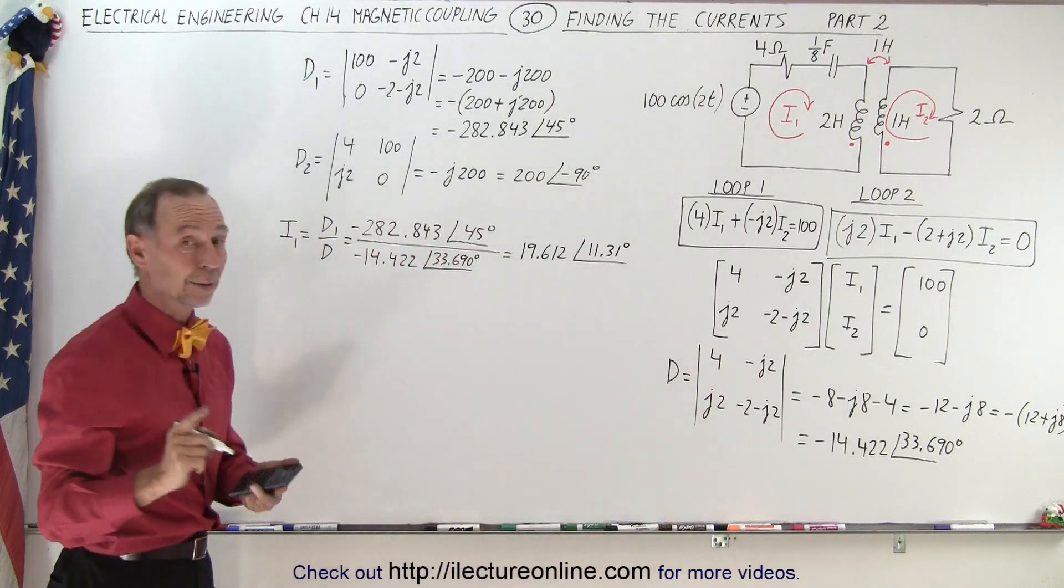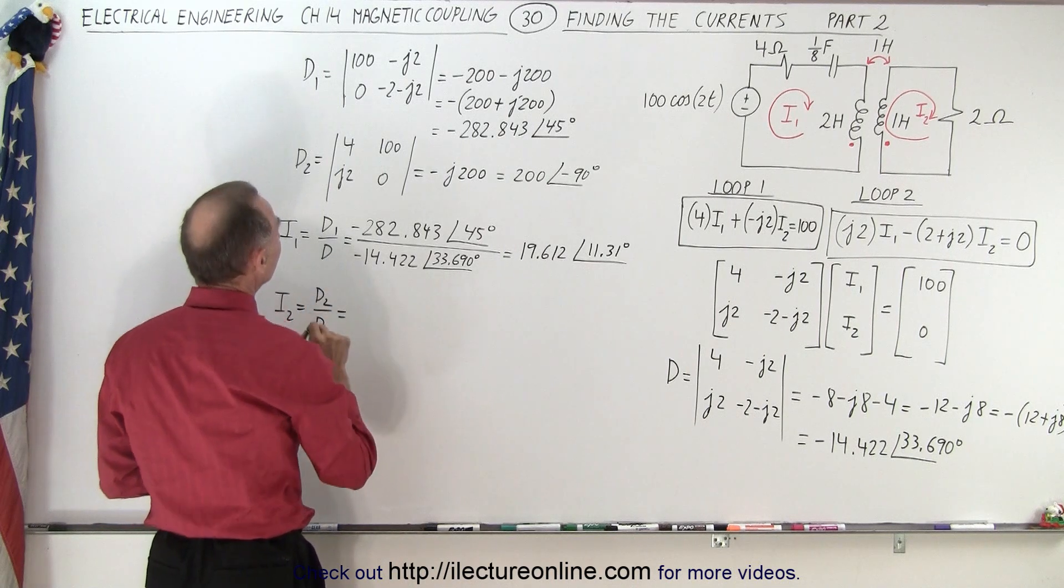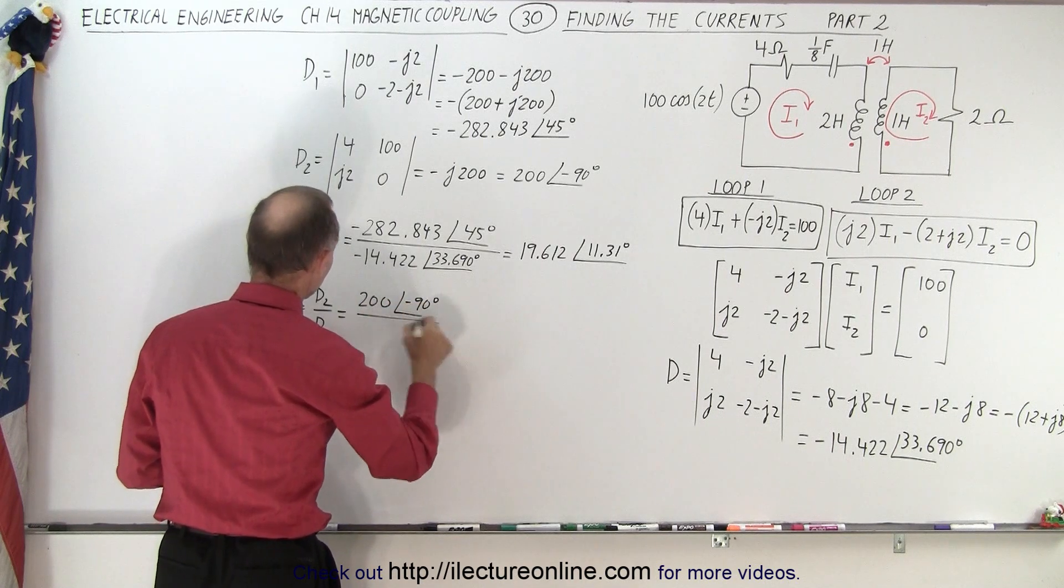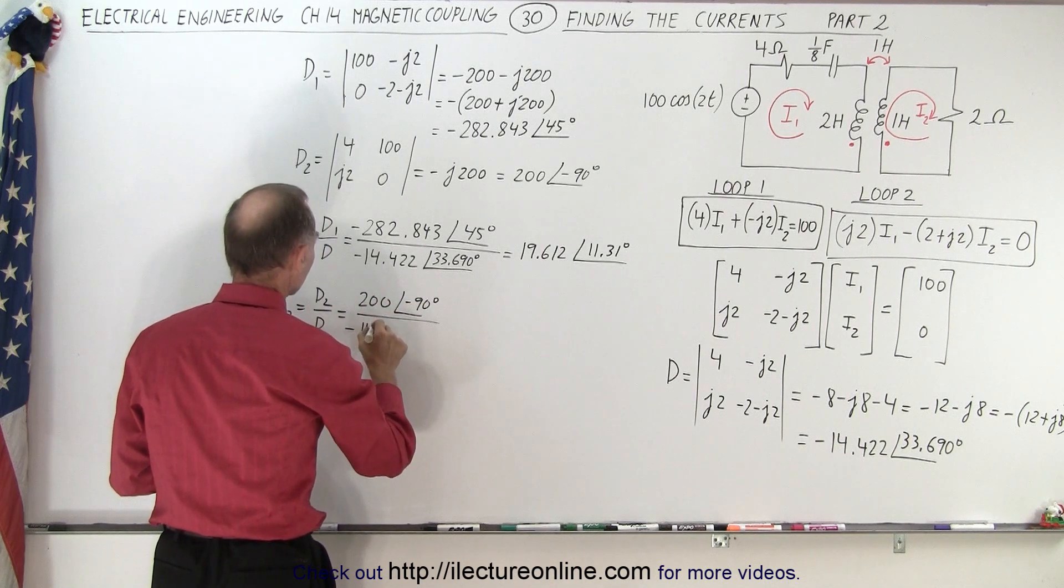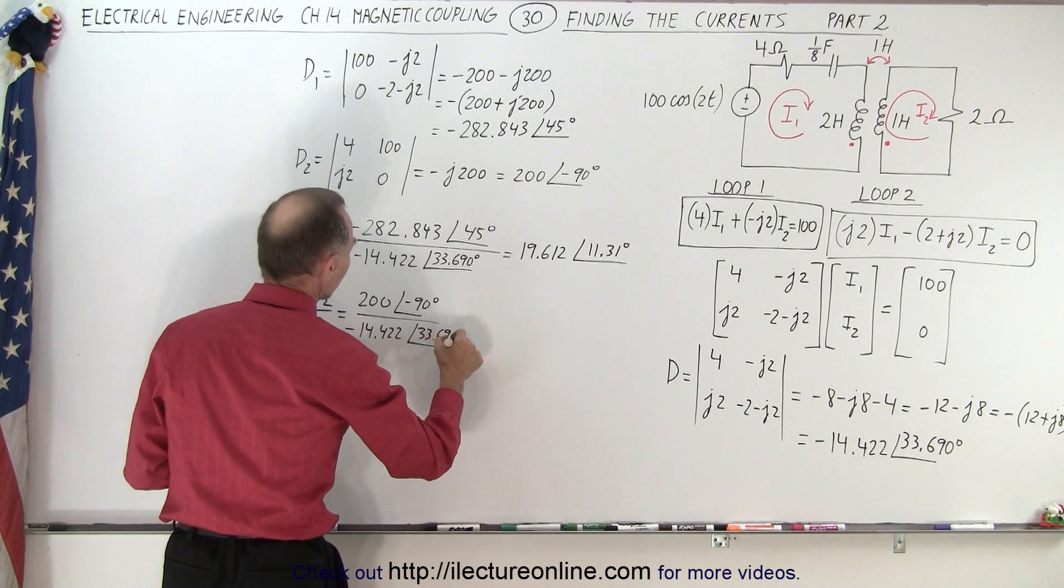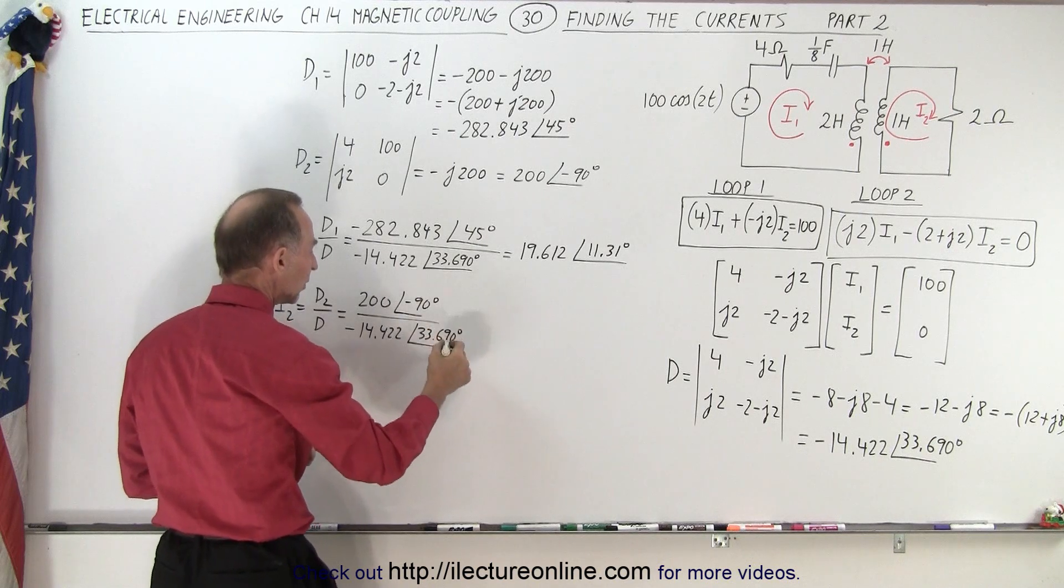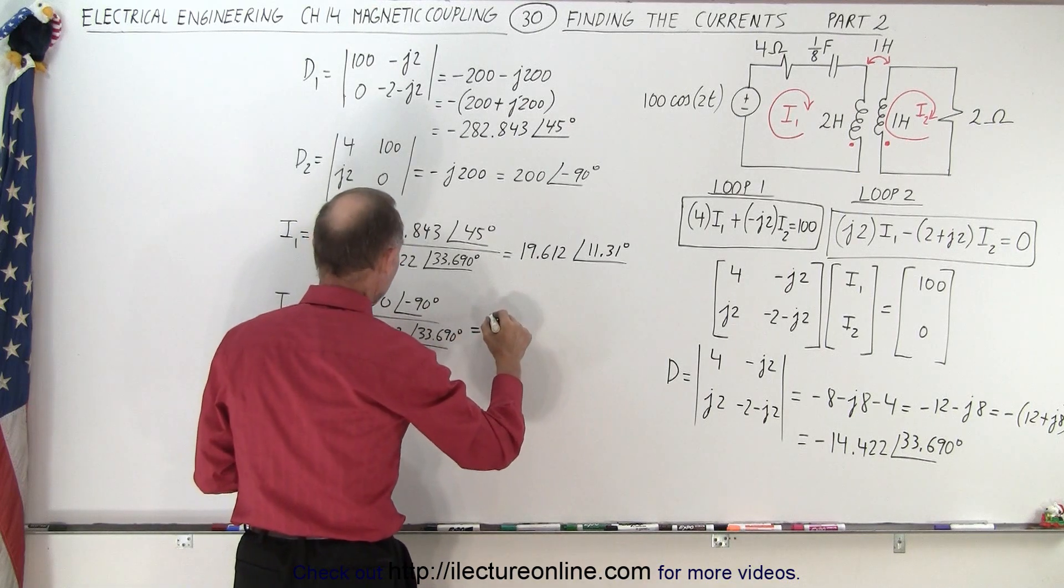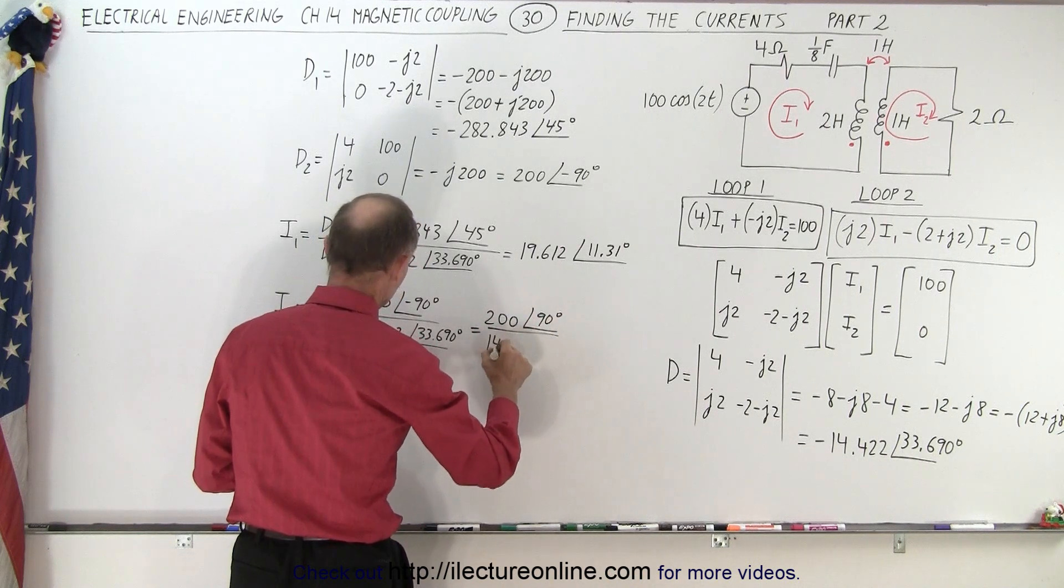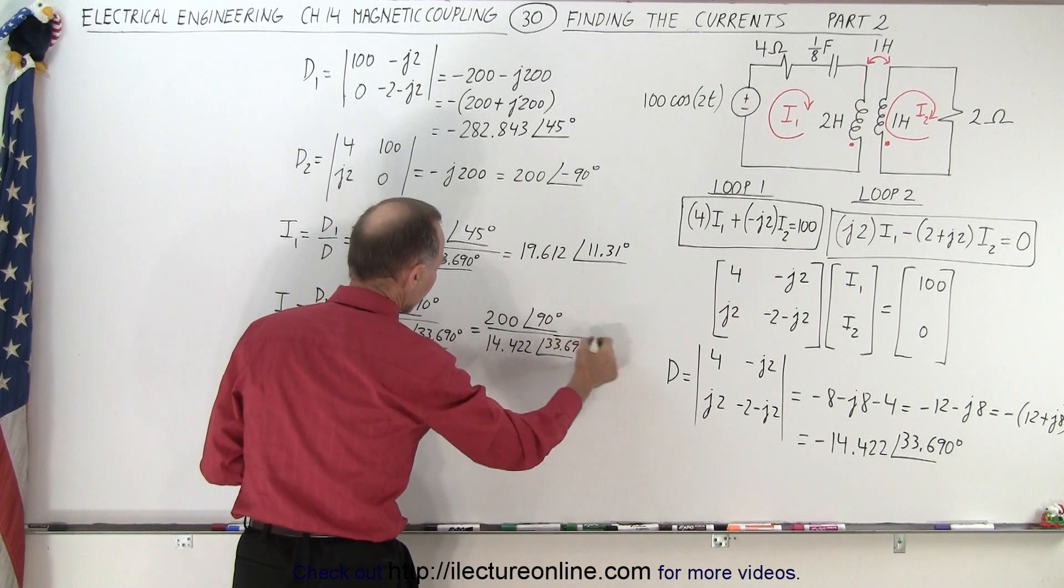Now for current 2, I2. This gives me D2 divided by D, which is equal to 200 with a phase angle of minus 90 degrees, divided by D, which is minus 14.422 with a phase angle of 33.690 degrees. Notice I can bring this negative up here and apply it to that. So add 180 degrees. This can be written as 200 with a phase angle of positive 90 degrees, divided by positive 14.422 with a phase angle of 33.69 degrees.